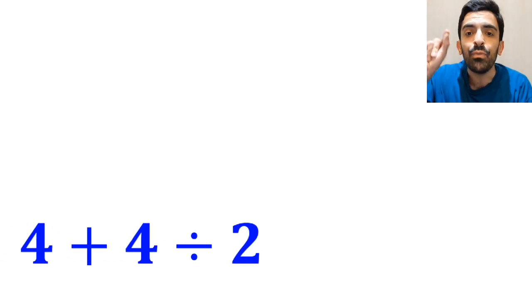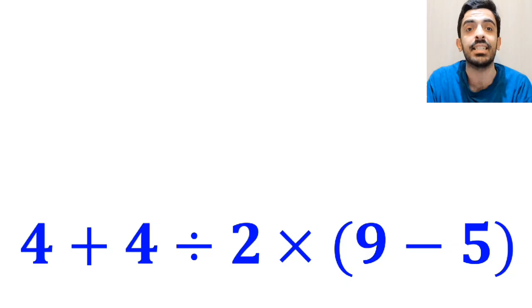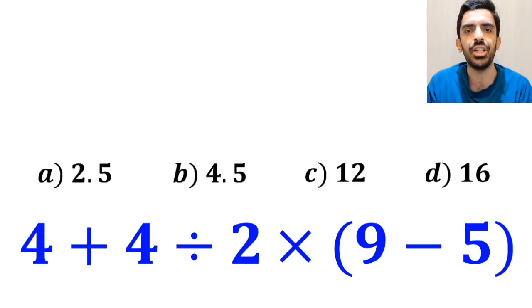What is the value of the expression 4 + 4 ÷ 2 × (9 - 5)? Which option do you think is the correct answer to this question?